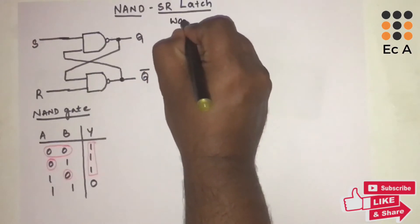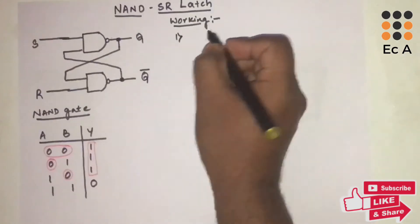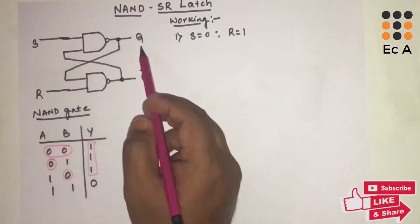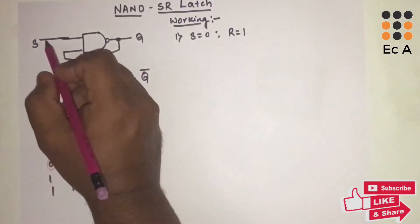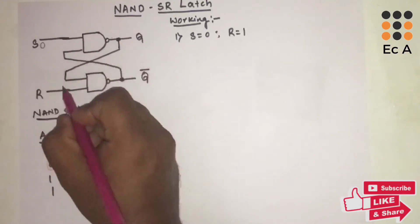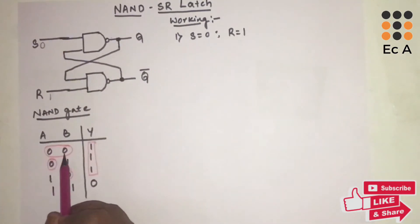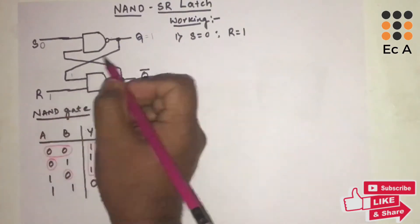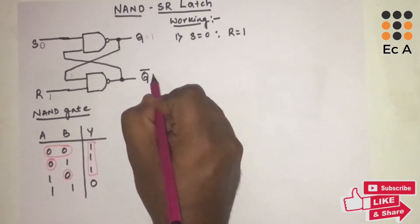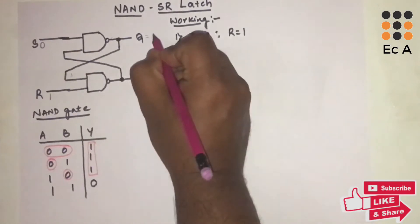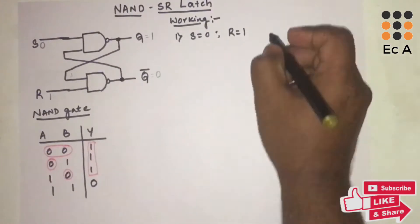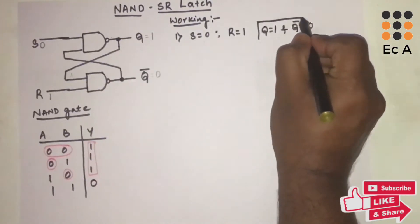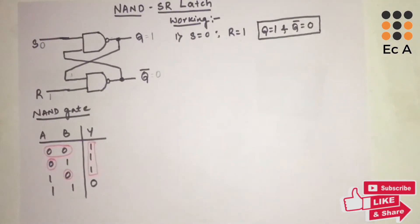Now let us see the working of the NAND SR latch. Consider S=0 and R=1. Since S is 0, and any one input being 0 makes the output 1, Q will be equal to 1. This 1 feeds back, so both inputs to the second gate are 1, making Q̄ equal to 0. So when S=0 and R=1, Q=1 and Q̄=0.